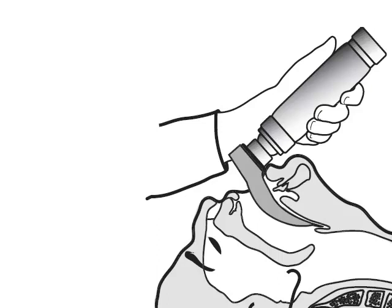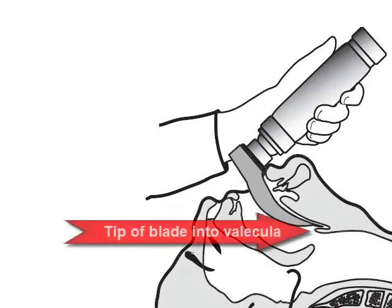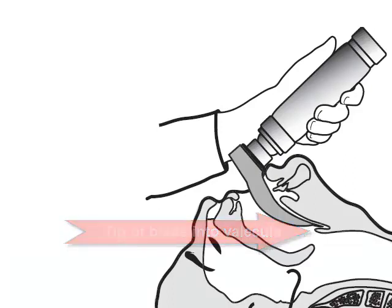Now when using the Macintosh blade or the curved blade as in this picture, you're going to advance the tip of the blade into the space between the base of the tongue and the epiglottis or the vallecula. You want to go ahead and apply force once you have the blade in position at about a 30 to 45 degree angle, and you're going to lift the entire laryngoscope and blade.